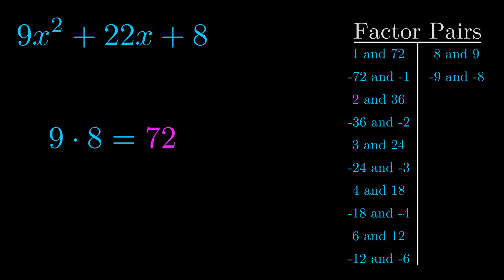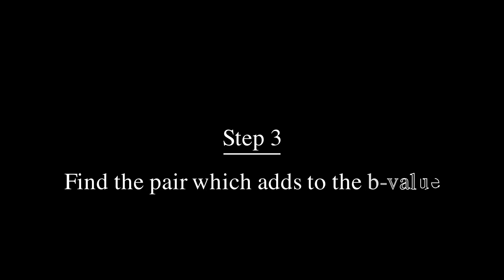Now once you have these factor pairs, the goal is to find which of these pairs adds to the b value. The b value is the coefficient on the x term.